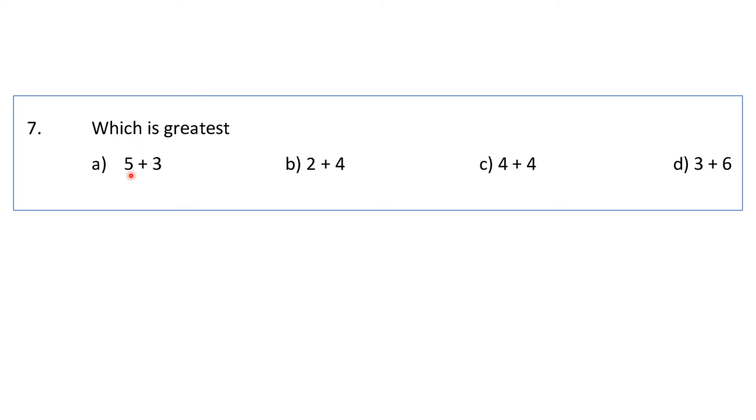Which is the greatest? We will check. Option A is 5 plus 3 which becomes 8. 2 plus 4 becomes 6, 4 plus 4 becomes 8, and 3 plus 6 becomes 9. Now which is the greatest? Greatest means which is the largest number. We all can see 9 is the largest among all 4 numbers. So answer will be D.